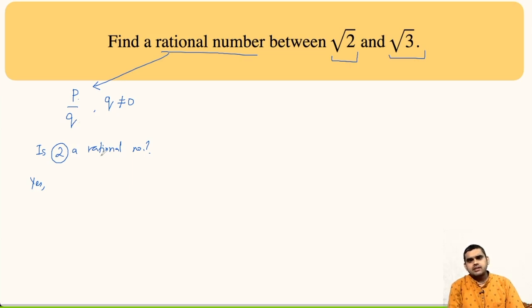So, why are we saying 2 is a rational number? It is a rational number because 2 can be expressed as 2 upon 1, where p equals 2 and q equals 1. So, this was just extra information that I wanted to give you.